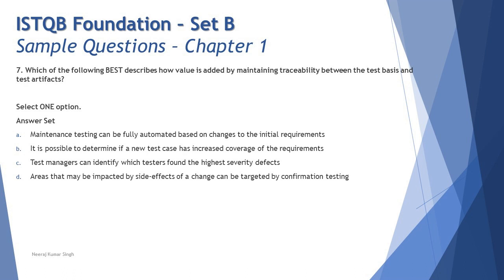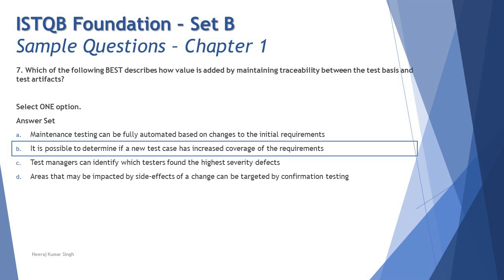Option D says 'areas impacted by side effects of a change can be targeted by confirmation testing.' But confirmation testing is about confirming a defect fix, not checking side effects — that's regression testing. The statement is incorrect because it conflates regression with confirmation. So the right answer is B: it is possible to determine if a test case has increased coverage of the requirements through traceability between the test basis and test artifacts.